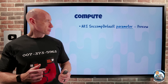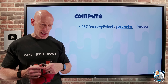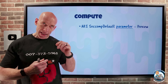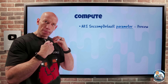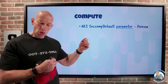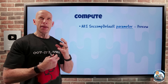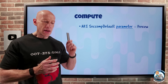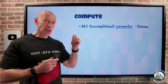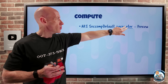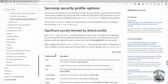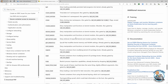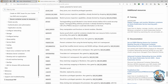On the compute side, AKS now has the seccomp default parameter. This is part of the secure computing model and is for Linux node pools only, as part of the Linux kernel security module. What this lets me do is restrict the syscalls that can be made from my sandbox container into the kernel. So if I had malicious code acting within a container and I enable this, it would restrict the syscalls they could make to the kernel and reduce the potential damage. The default is unconfined, so it will not block any calls, but if I set it to runtime default it will restrict those calls. You can see all the different types of syscalls that would no longer work — cloning new namespaces, manipulation of functions, and a whole bunch of other things.